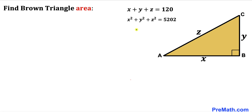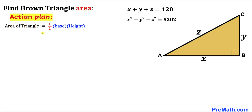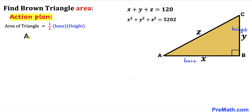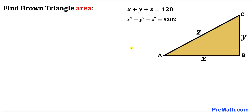Let's get started. Here's our action plan: since we are interested in calculating the area of triangle ABC, let's recall the area of a triangle formula — area equals one half times base times height. In our case, our base is X and our height is Y, so the area of this triangle is going to be one half times X times Y. Our task is to find the value of X times Y divided by 2.